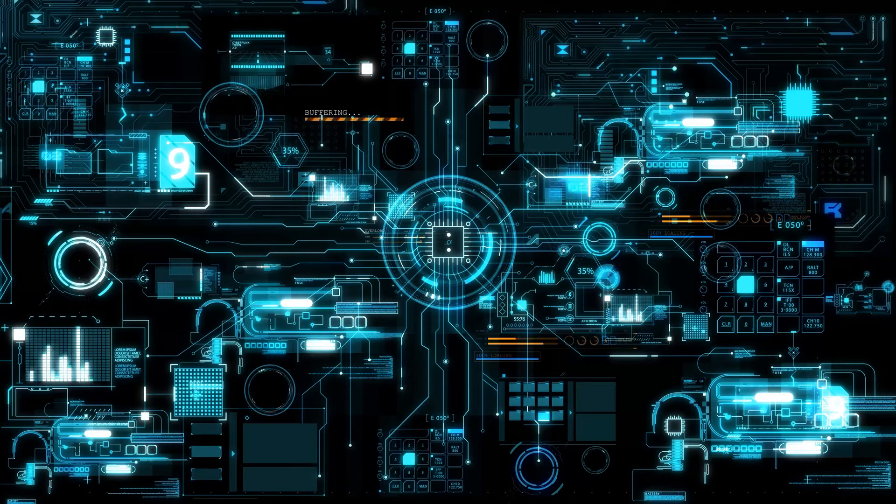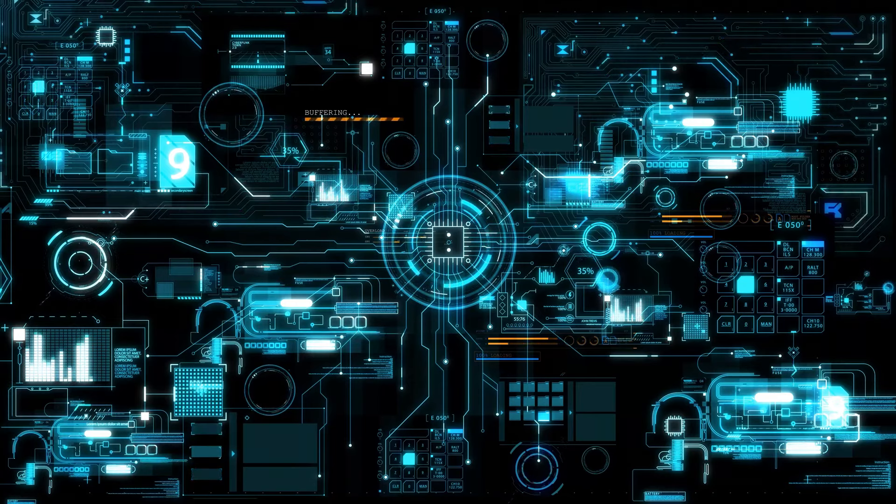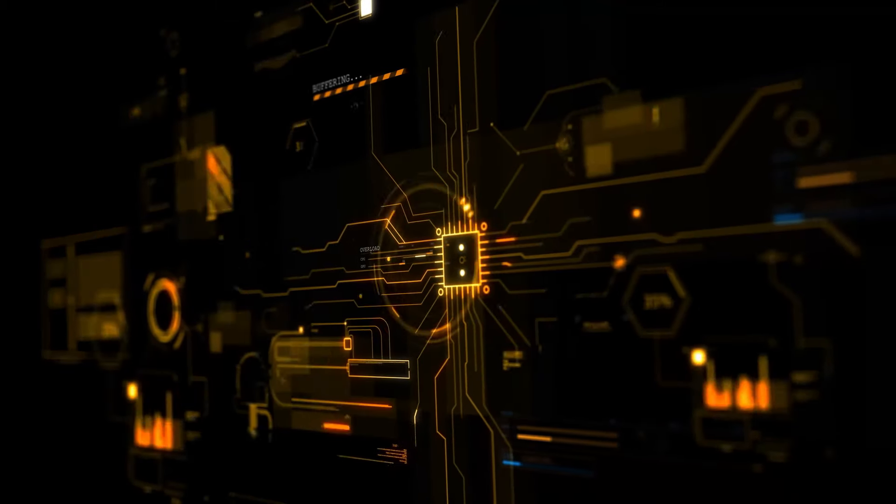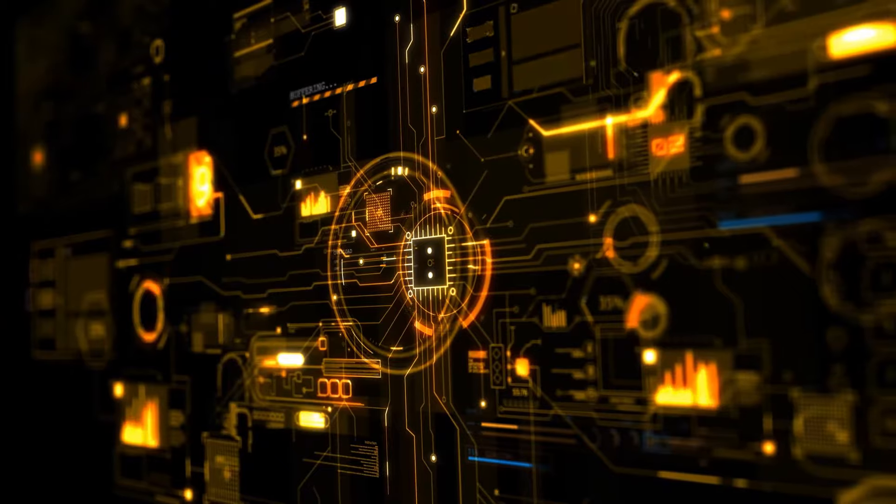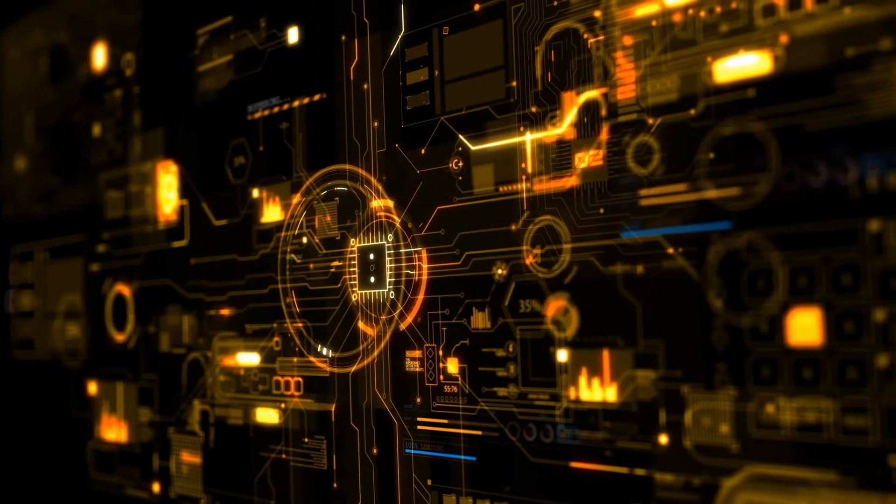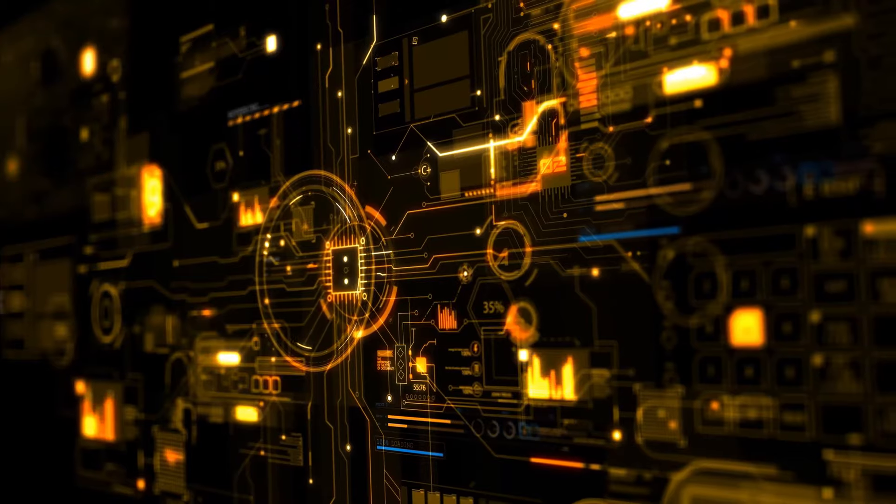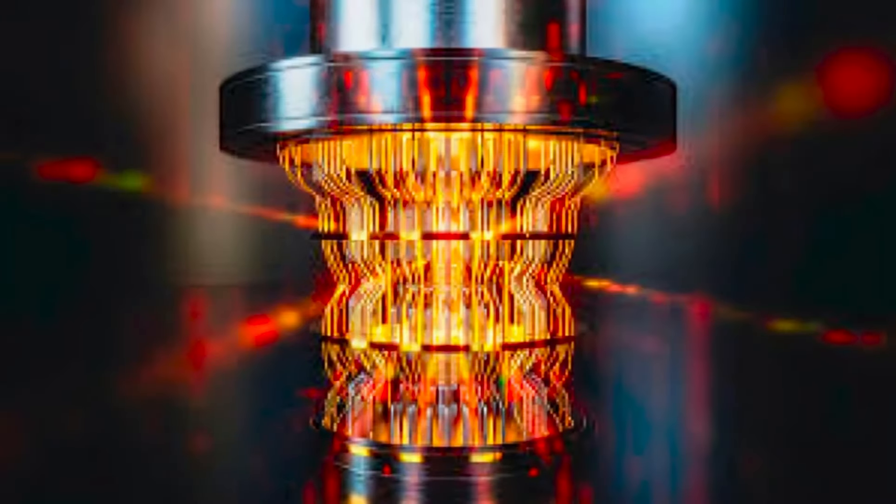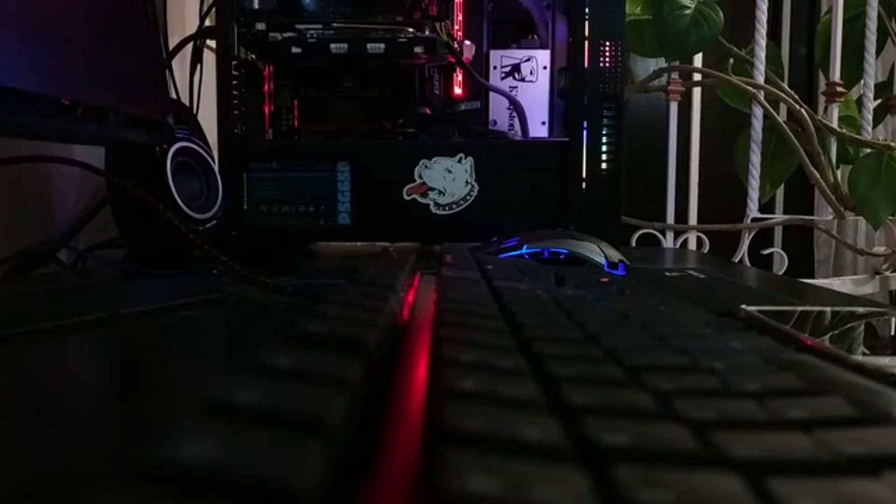But first, let's start with the basics. Classical computers, which include everything from your smartphone to the world's most powerful supercomputers, process information in bits. These bits can represent either a zero or a one, forming the foundation of binary code. All the operations performed by classical computers are based on manipulating these bits through logical operations.